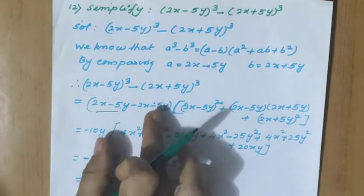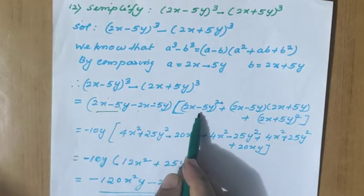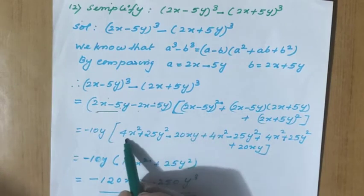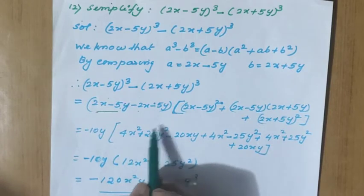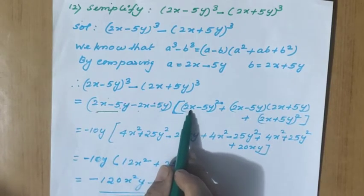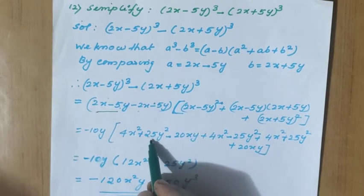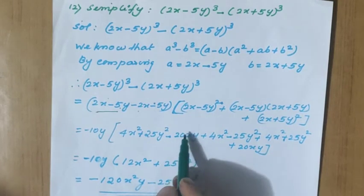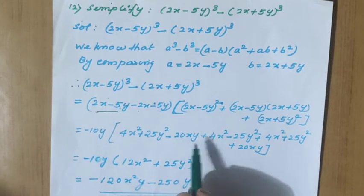So we have seen the simplification of the first bracket. Now what is the second bracket? The first term is a minus b whole square. The expansion of a minus b whole square is a square plus b square minus 2ab. So a square is 4x square, b square is 5y whole square, that means 25y square, and the middle term 2ab is minus 2 into 2x into 5y, that is minus 20xy.